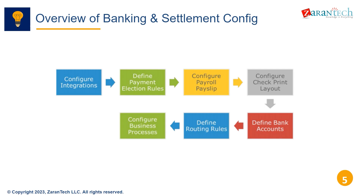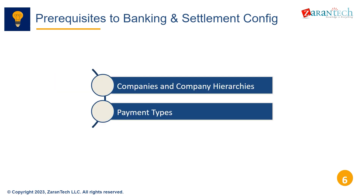Before configuring banking and settlement, two prerequisites must be in place: companies and company hierarchies, and payment types. You need authorized companies to hold bank accounts, and payment types like check or direct deposit determine settlement requirements.